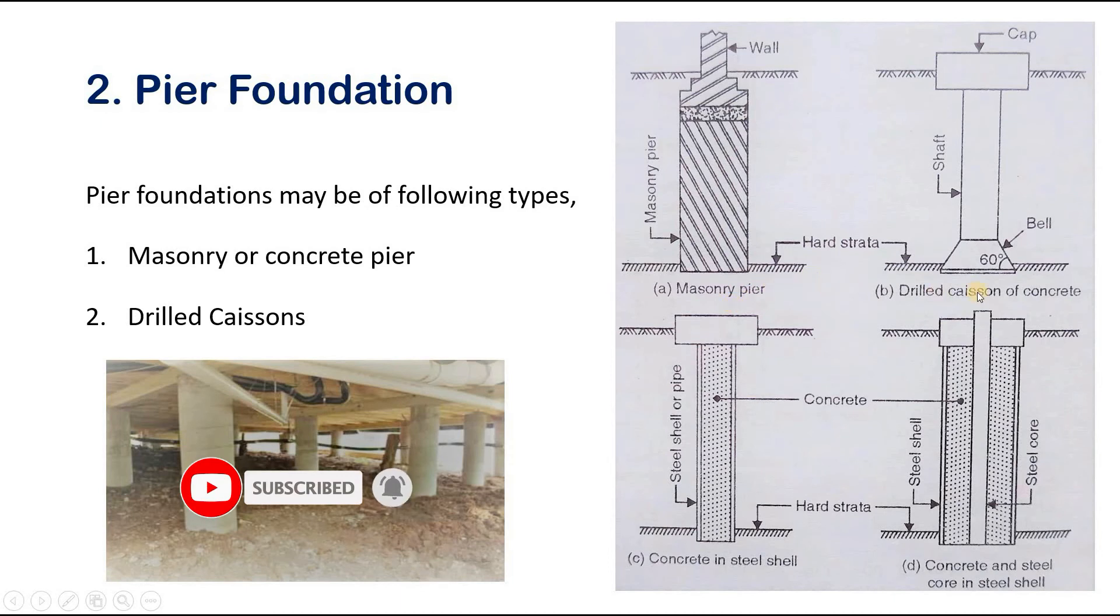Next, drilled caissons are generally drilled with mechanical means. They are largely of compressed members. Drilled caissons may be of three types: concrete caissons, caissons of steel pipes or shells, or caissons with concrete and steel core in steel pipes.